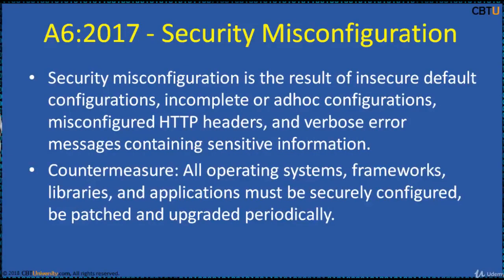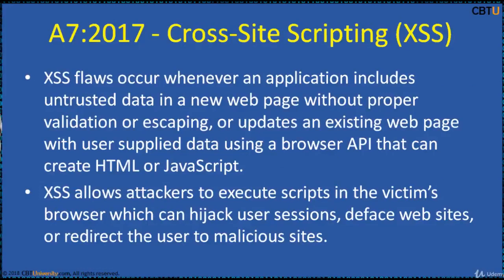Security Misconfiguration is the result of insecure default configurations, incomplete or ad hoc configurations, misconfigured HTTP headers, and verbose error messages containing sensitive information. The countermeasure is ensuring all operating systems, frameworks, libraries, and applications are securely configured and patched and updated periodically. Cross-Site Scripting (XSS) flaws occur whenever an application includes untrusted data in a new web page without proper validation or escaping, or updates an existing web page with user-supplied data using a browser API that can create HTML or JavaScript. XSS allows attackers to execute scripts in the victim's browser, which can hijack user sessions, deface websites, or redirect the user to malicious sites.